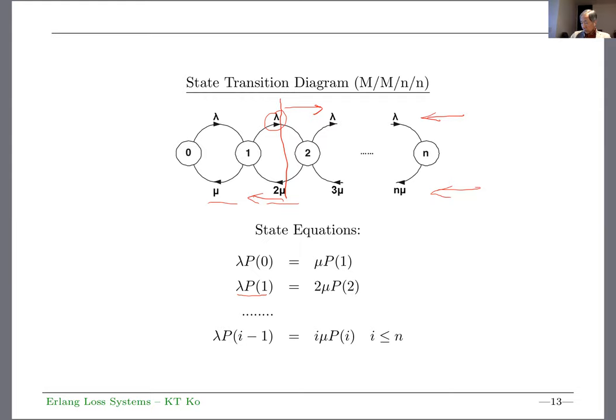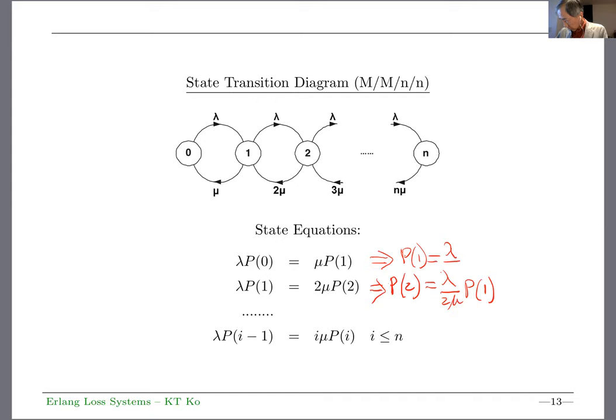With that understanding of state equations, we can express P2 in terms of P1, and P1 in terms of P0. Therefore, you can express every state probability if you know P0. P_i equals lambda to the i over mu to the i times i factorial times P0, or A to the i over i factorial times P0.